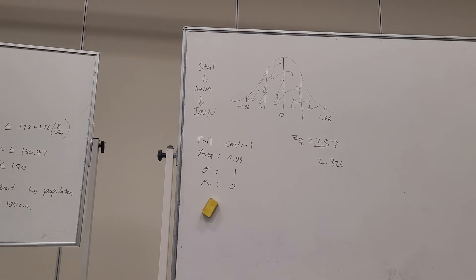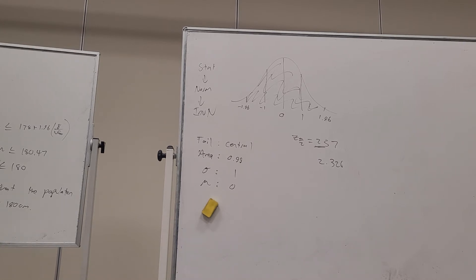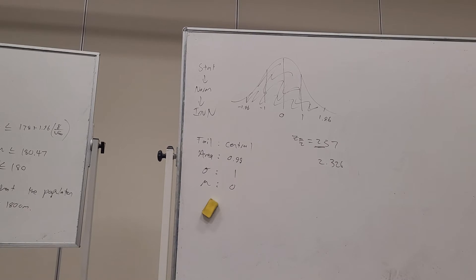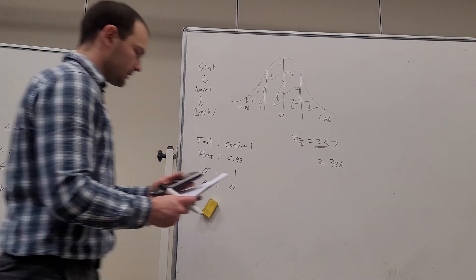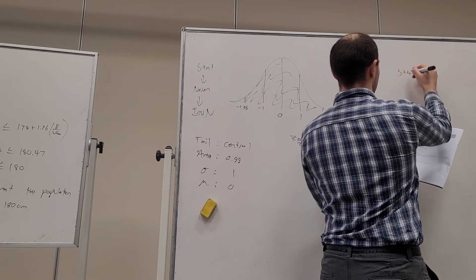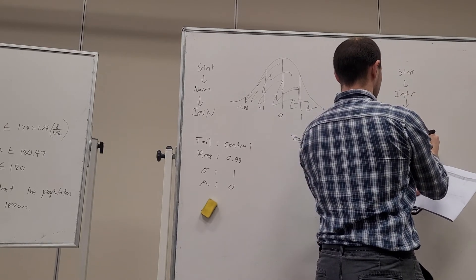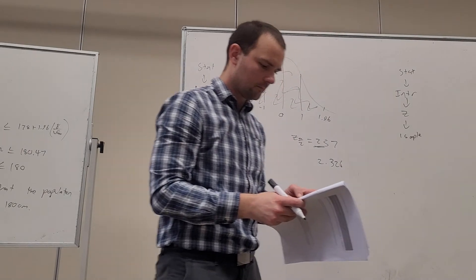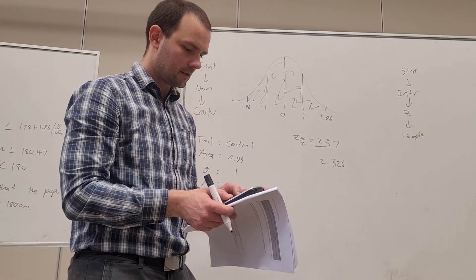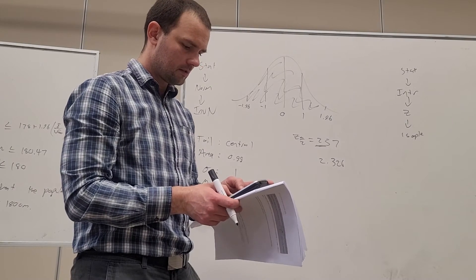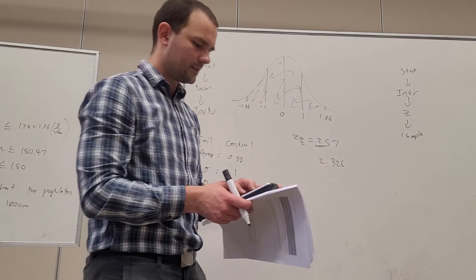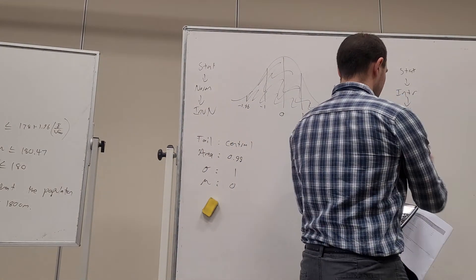So that's that question there. Find the 90% confidence interval and the 99% confidence interval. How does it compare? Well, we're going to do that. We can do it using this formula but it does take quite a lot. There will be some questions that do require a bit of rearranging, so that's why we know. But we can also use a calculator technique where you just put the information in and it will pop out the interval for you. So that is listed on the sheet there. So we're going statistics, interval, Z interval and first sample.